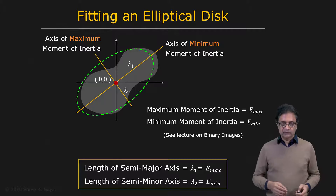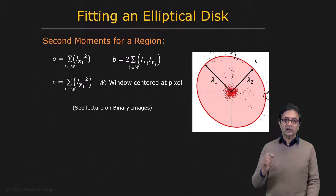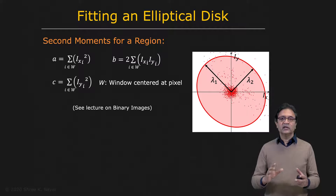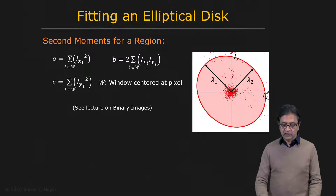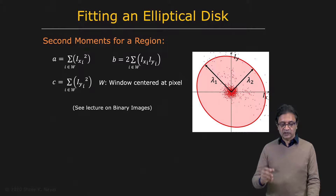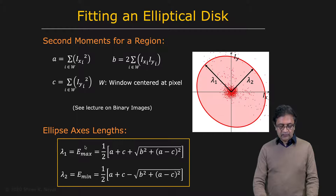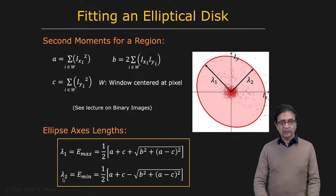We apply the same technique to our gradient distribution by treating it like a binary object — each point in the distribution is a one. We use these points to compute the second moments a, b, and c, where a and c are the second moments with respect to the y-axis and x-axis, and b is the product moment. From these three numbers, we can compute the maximum and minimum second moments, which correspond to the semi-major and semi-minor axes.